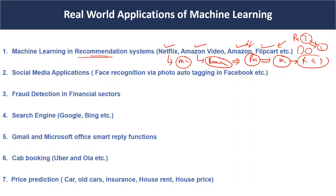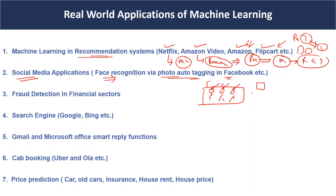The second application is social media. In social media applications you can see photo auto-tagging in Facebook. For example, if there are five people in a photo, Facebook automatically tags the people's names. If a photo is Tom's, and Tom's photo is already stored in the Facebook account, Facebook uses a matching algorithm to match Tom's face inside the new photo — this is called photo auto-tagging.